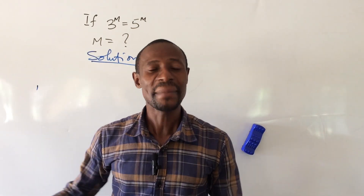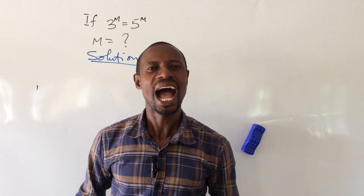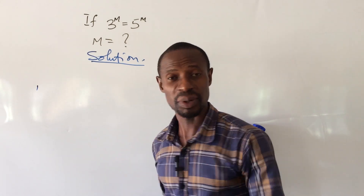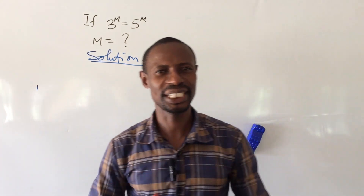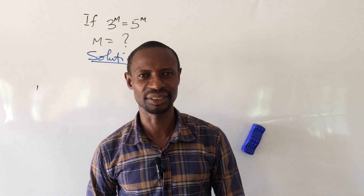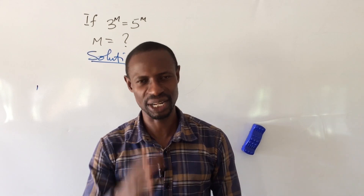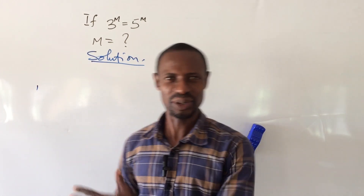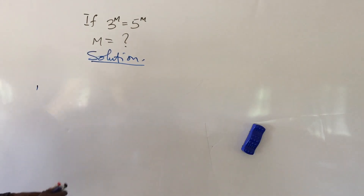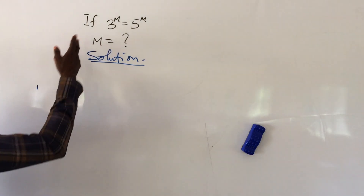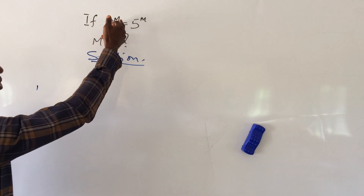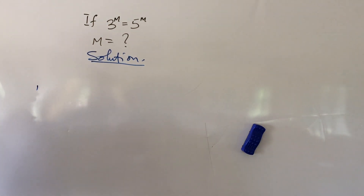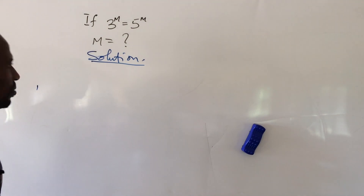Welcome to Online Maths TV. My name is Jakes and Emma. As usual, we have a very nice challenge here. Today's challenge: the question says if 3 to the power of m equals 5 to the power of m, what then will be the value of m?